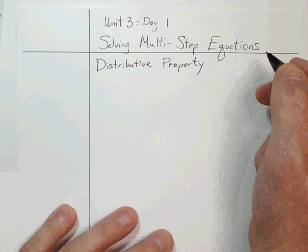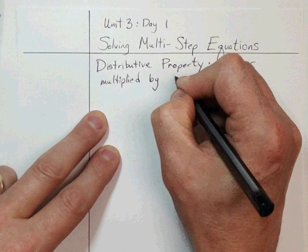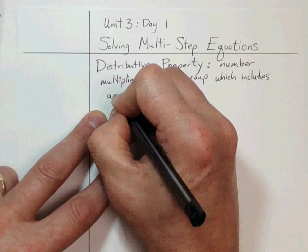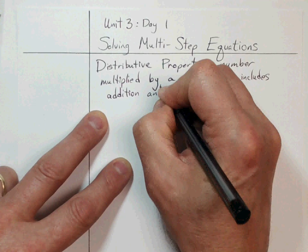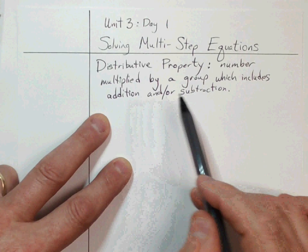The distributive property is a number that is multiplied by a group, which means we're going to have parentheses that include either addition and/or subtraction. That's really the only writing we're going to do today — a number multiplied by a group which includes addition and/or subtraction. 'And/or' means it can be one or the other, or both.